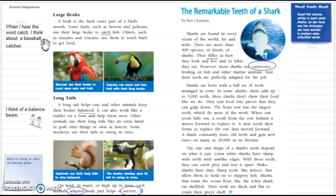Sharks are found in every ocean of the world far and wide. There are more than 400 species or kinds of sharks. They differ in how they look and live and in what they eat. However, most sharks are carnivores, feeding on fish and other marine animals.